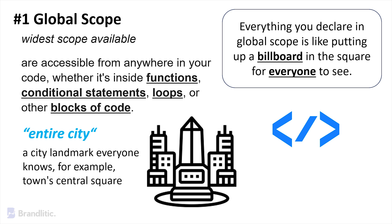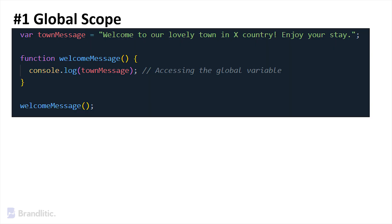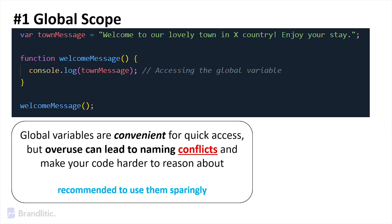Any function or code block within your program can read and modify these global variables. Here's an example of Global Scope. A word of caution: global variables are convenient for quick access, but overuse can lead to naming conflicts and make your code harder to reason about. That's why it is generally recommended to use them sparingly.